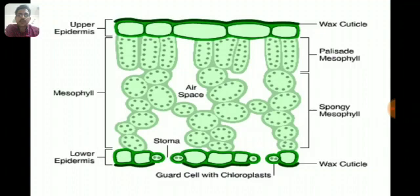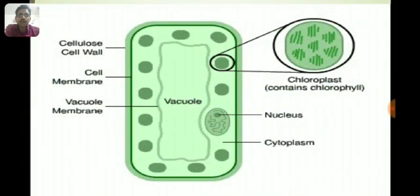The mesophyll tissue has two types of cells. The upper pillar-like cells are called palisade tissue, and the loosely arranged cells are called spongy parenchyma. A single cell is shown with a large central vacuole and many dot-like structures which are green in color — these are chloroplasts.